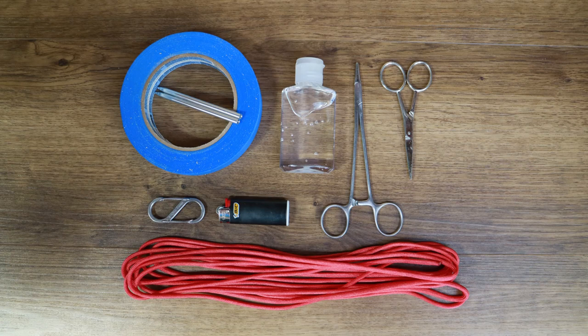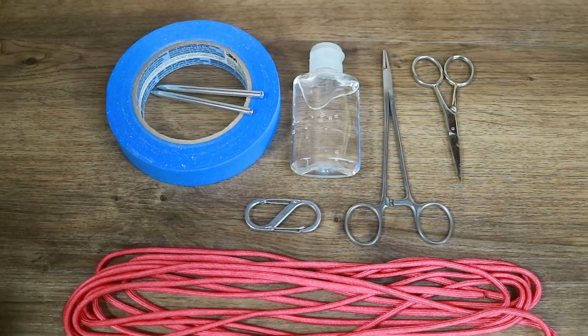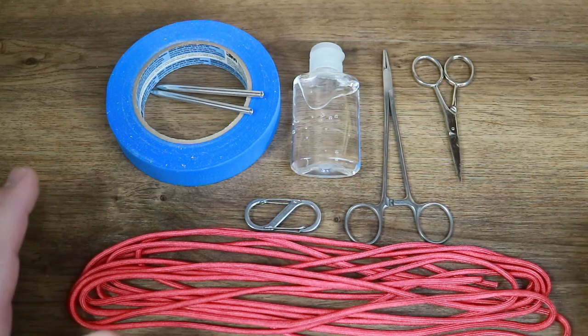There are a few things you will need to put this together, but you should have most of them already. And what you don't have, you can get for less than $10 on the interwebs. To start with, you will need paracord, a 15 foot length of your chosen color.